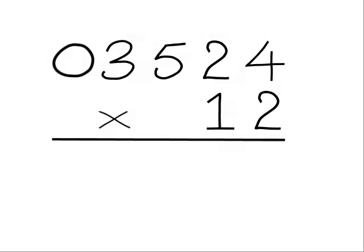Starting at the right, we have 4. We double 4, we get 8. There's no neighbor, so we simply write down the 8.